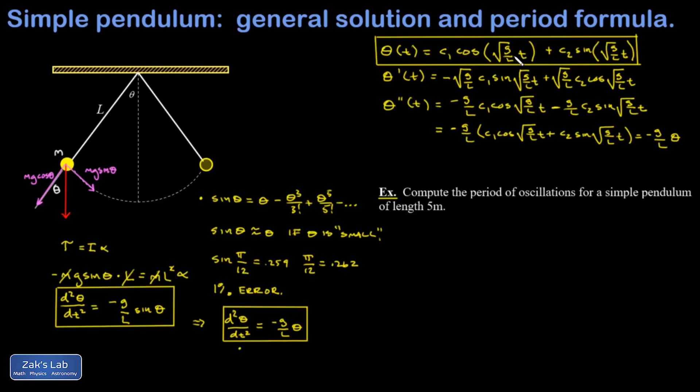All I'm doing in this video is nailing down what's the period of oscillation. So these periodic functions, the coefficient of t is root g over L. So to get the period of oscillation, I just take 2 pi divided by that coefficient, or 2 pi times the reciprocal of that coefficient. And there's our standard formula for the period of a simple pendulum.